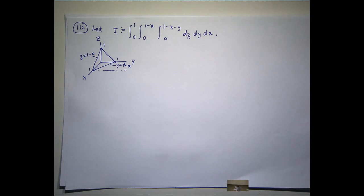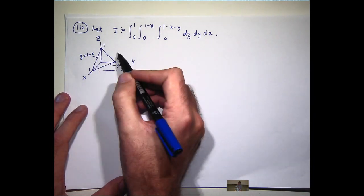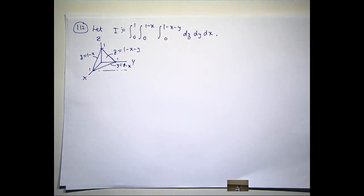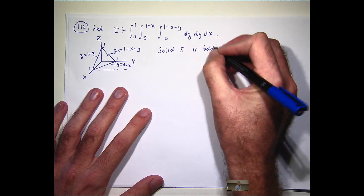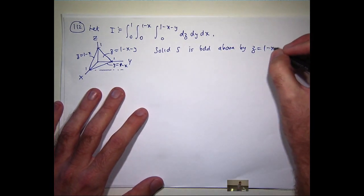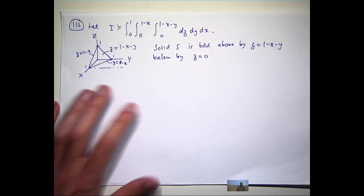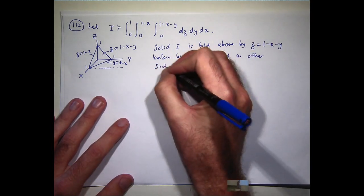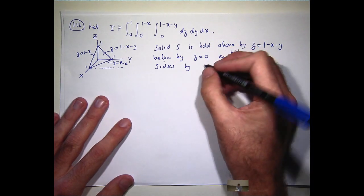So, you can think of this solid as being bounded below by the x, y plane, bounded on this side by this x, z plane, on this side by this y, z plane, and above by the plane z equals 1 minus x minus y. So, let's call the solid S. It's bounded above by z equals this, bounded below by this, and on the other sides by the coordinate planes.